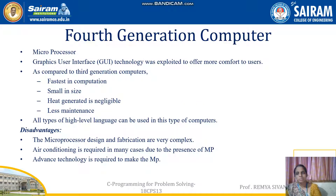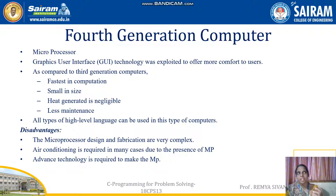Fourth generation computers used microprocessors. Graphical user interface technology was introduced to offer more comfort to users. Compared to the third generation, speed is far better, size is very small, storage is greater, cost and maintenance are lower, and energy consumption is less. The disadvantage is that microprocessor design and fabrication is very complex, requiring advanced technologies and air conditioning. All types of high-level programming languages started to be used from the fourth generation.